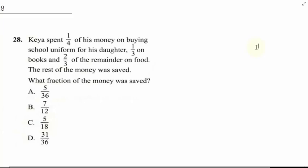Question 28: Keya spent 1/4 of his money on buying school uniform for his daughter, 1/3 on books, and 2/3 of the remainder on food. The rest of the money was saved. What fraction of the money was saved?